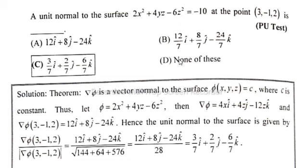So partially differentiate with respect to x: ∂φ/∂x = 4x. ∂φ/∂y = 4z. ∂φ/∂z = -12z.